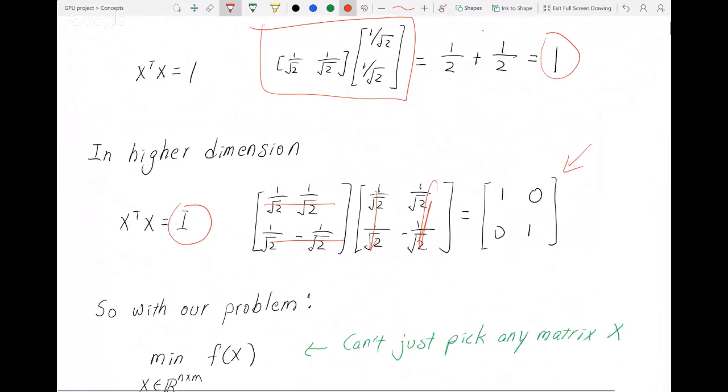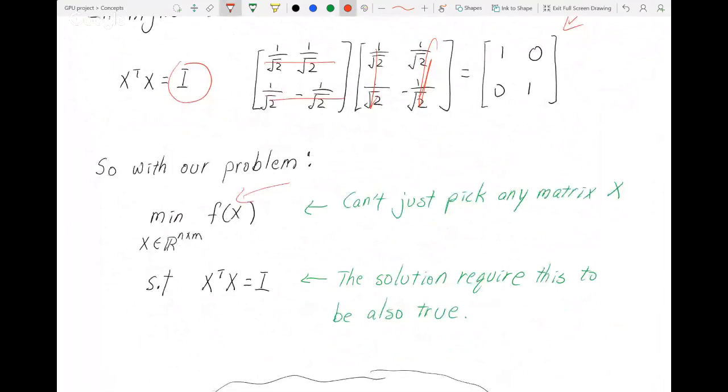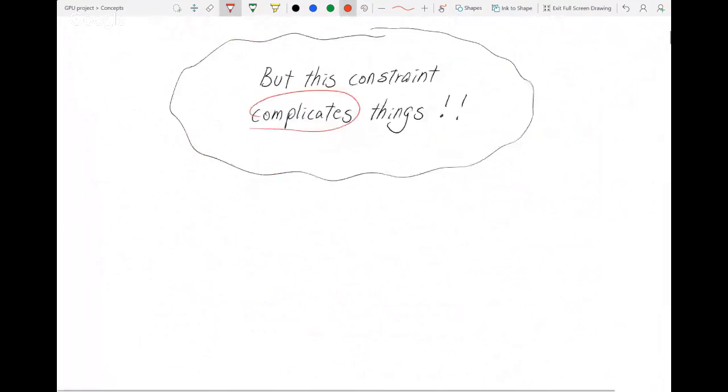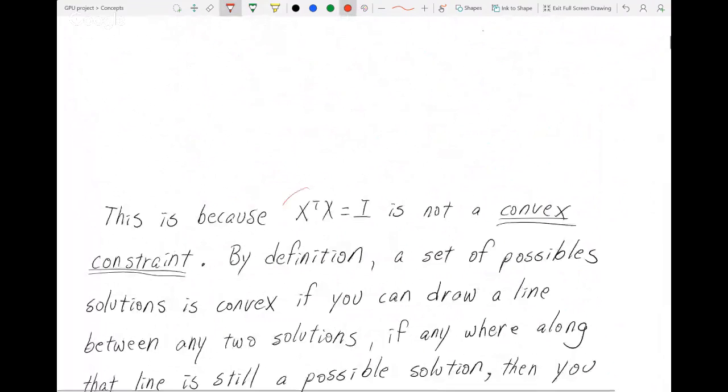So in our problem, we can't just pick any x. We must pick an x such that this constraint is satisfied. But this constraint complicates things, mostly because this constraint is not a convex constraint.